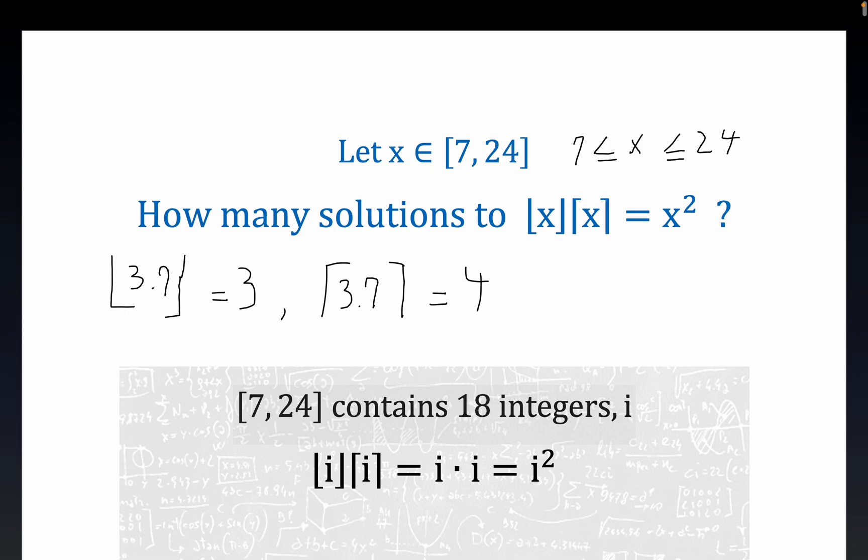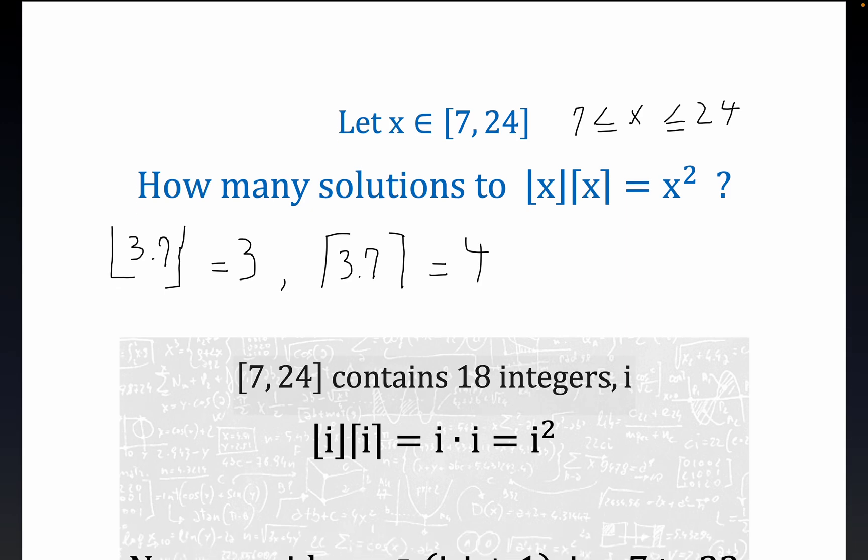Some people will say 24 minus 7 is 17, but it's always one more because you have to count both endpoints, so it's really 24 minus 7 plus 1. So there's 18 integers. The floor and the ceiling of an integer is always just the integer. The nice thing about floor and ceiling functions is they always return an integer unconditionally. So this is fairly trivial - the floor of i times the ceiling of i is just i times i, but that's i squared. So far we have 18 solutions based on just the integers that are contained in this interval.